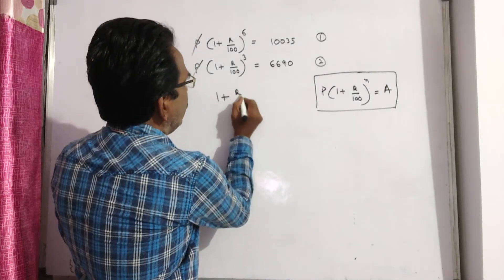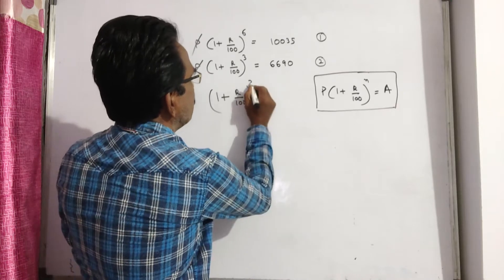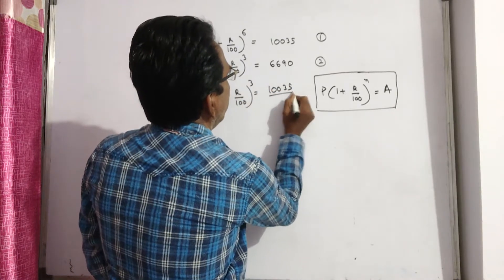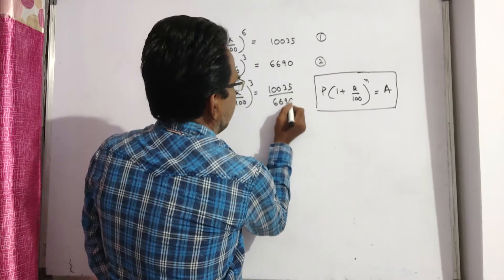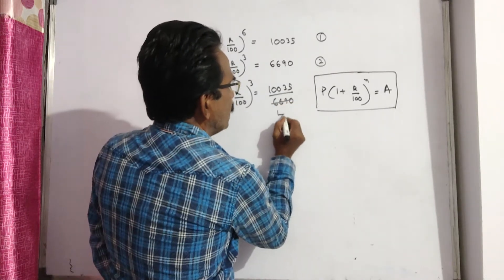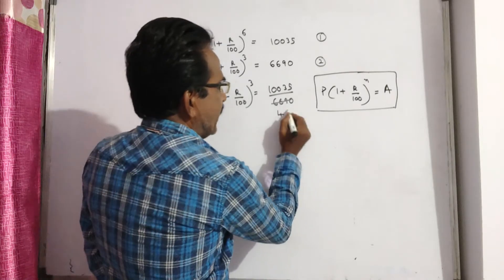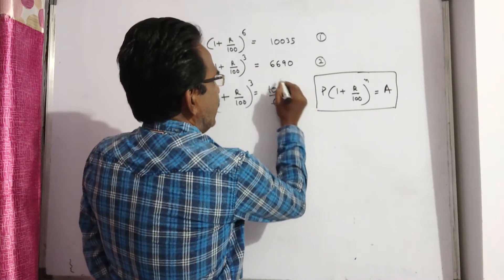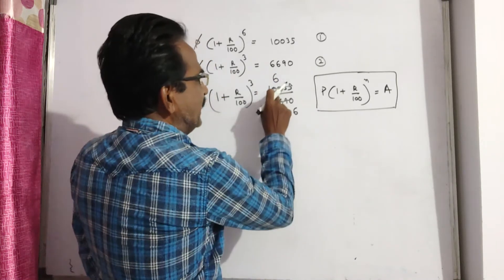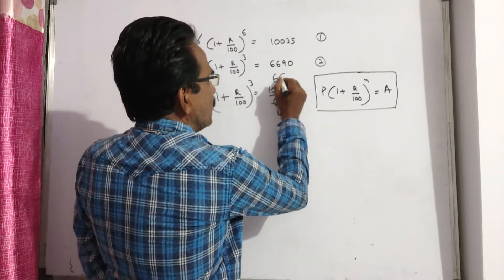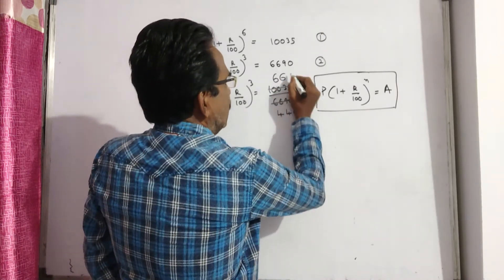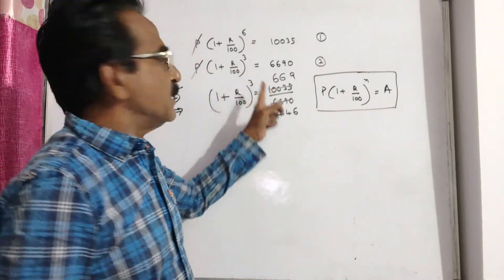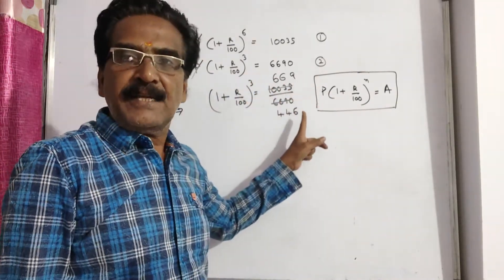Whole power 6 by whole power 3 means whole power 3 remains. So, 1 plus r by 100 whole power 3 is equal to 10035 by 6690. Let us cancel this with 15, 15 fours, 60, 69, again 15 fours, 60, 15 sixes, again 15 sixes, 90, 10 remaining, 19. So, 1 plus r by 100 whole power 3 is equal to 669 by 446.